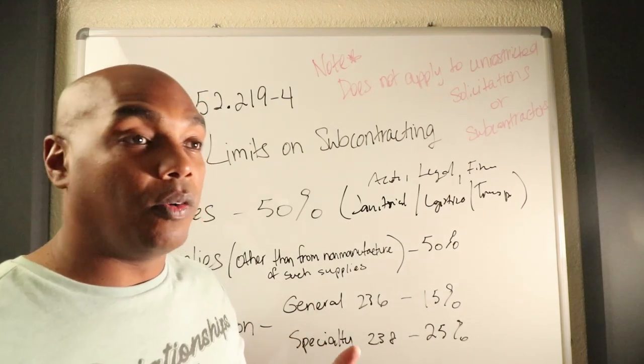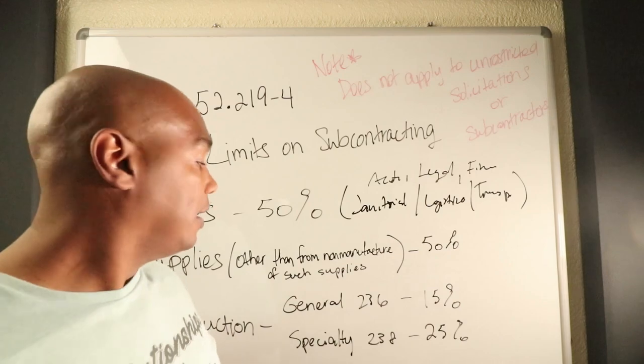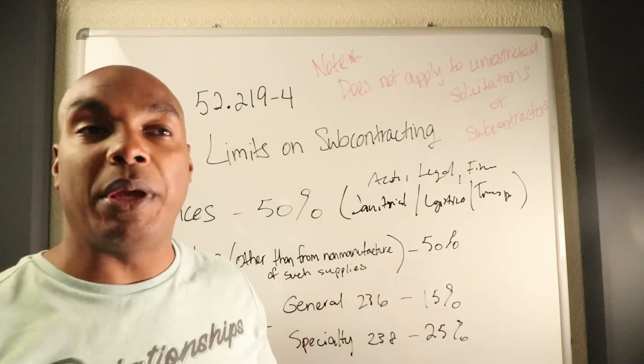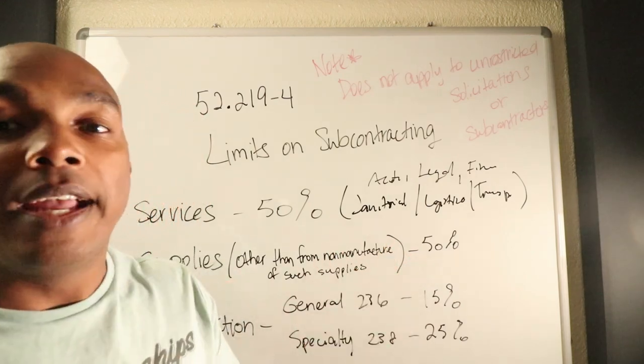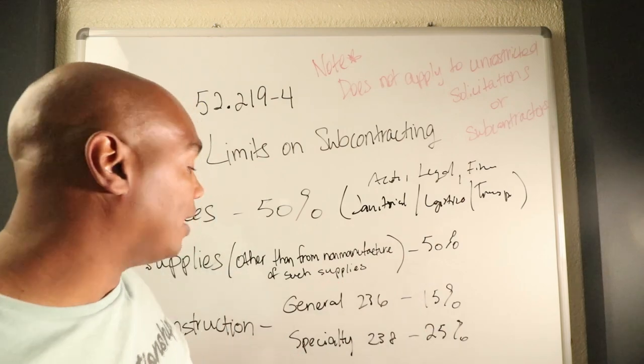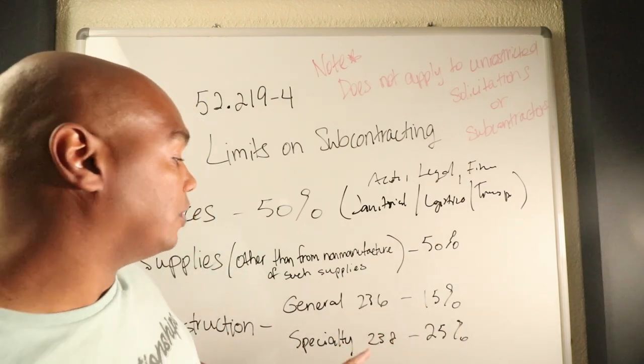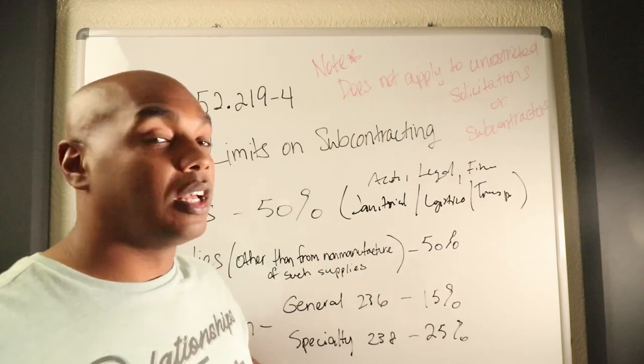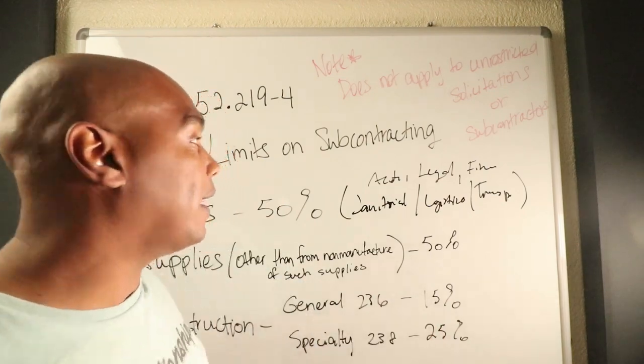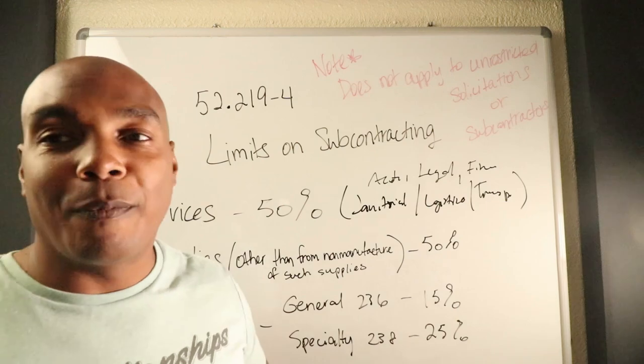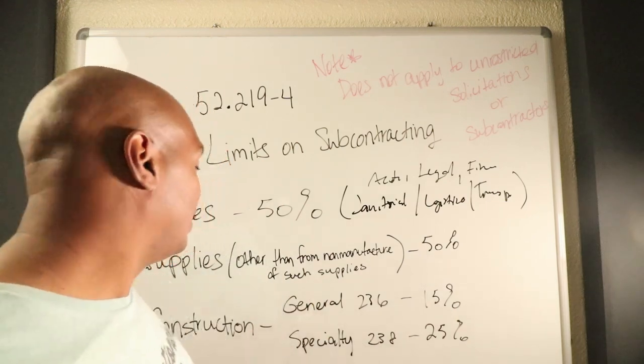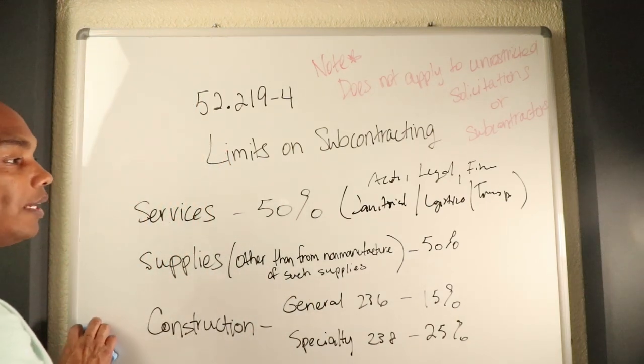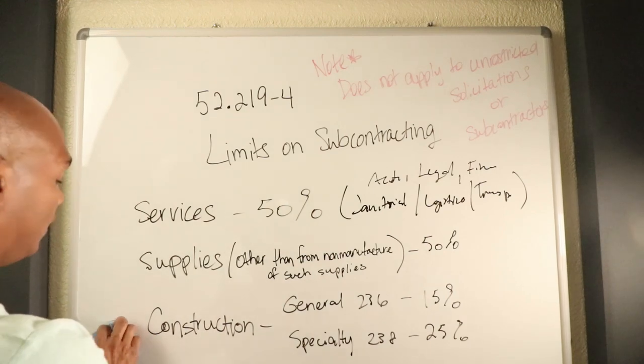Specialty trades are your trades like air conditioning, electrical, and plumbing. General construction will be the big boys, so when they give you a big project and you've got to do multiple trades in that project, that falls under 236 and it's only 15% of work. You could essentially sub out the majority of the work.